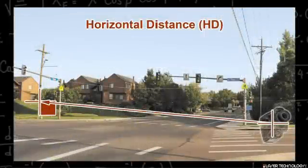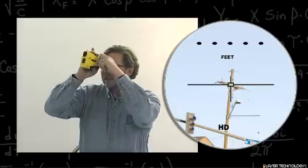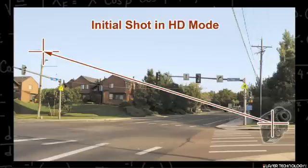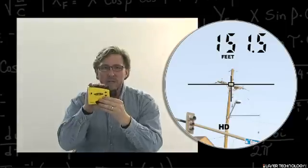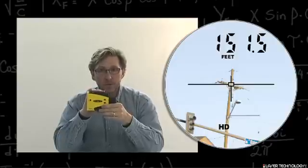In the standard measurement mode, you will look through the laser and hit the fire button to acquire your target. When you see a measurement at the top that has a .5 or .0, that is one foot precision.